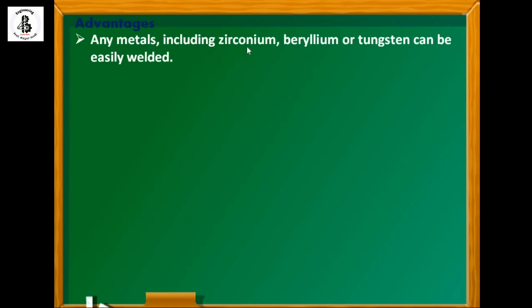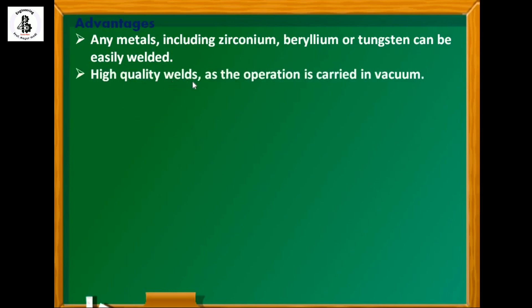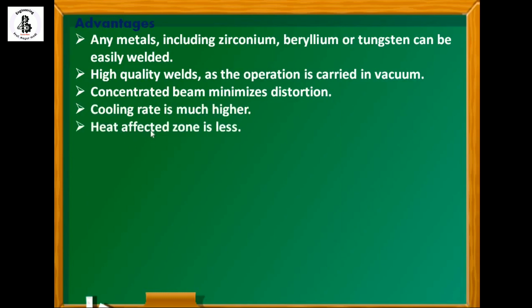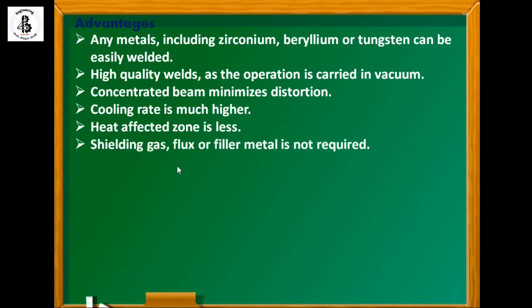Advantages of this process: any metals including zirconium, beryllium, and tungsten can be easily welded. High-quality welds are produced since the operation is carried out in vacuum. The concentrated beam minimizes distortion in the workpiece. The cooling rate is much higher and the heat-affected zone is less because of the vacuum chamber and concentrated beam. Shielding gases, fluxes, or filler metals are not required to perform the joint.